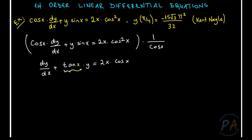Now we see that tan(x) equals P(x) and 2x·cos(x) equals Q(x). In this form, the first order equation is in the form of a linear differential equation of order 1.